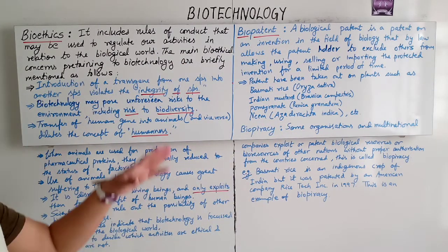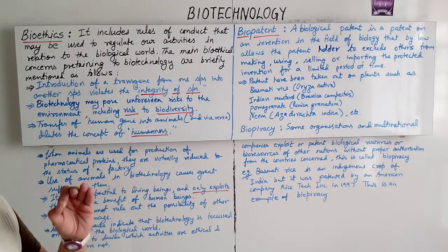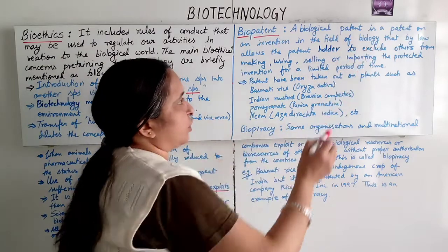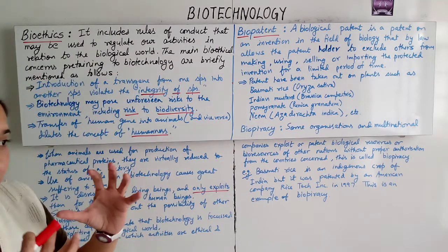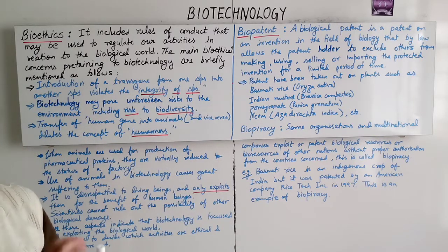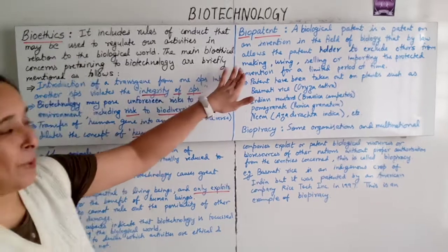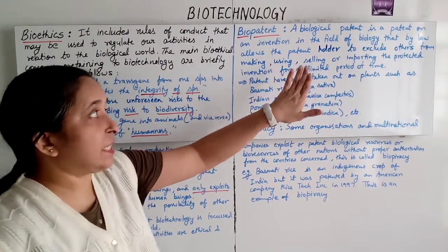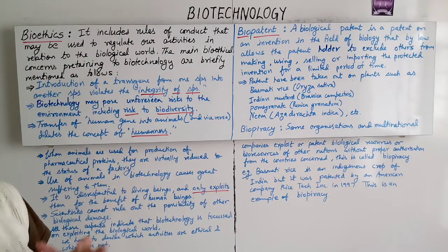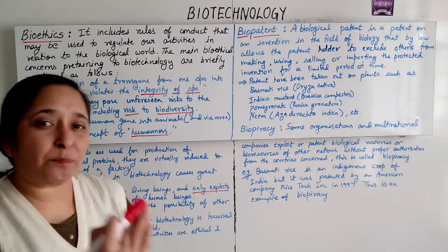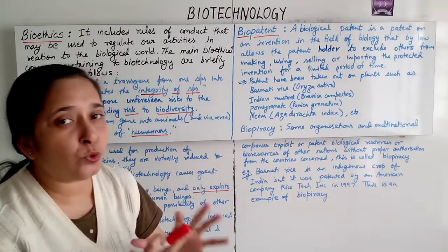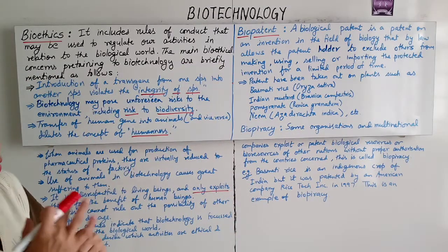A biological patent is a patent on an invention in the field of biology that by law allows the patent holder to exclude others from making, using, selling, or importing the patent holder's protected inventions for a limited period of time. So only the patent holder will use all these facilities, not others.